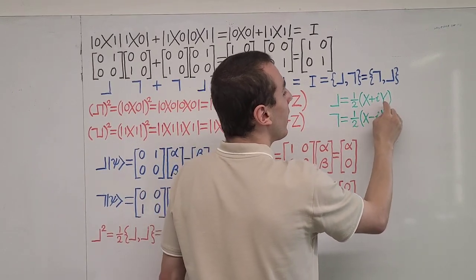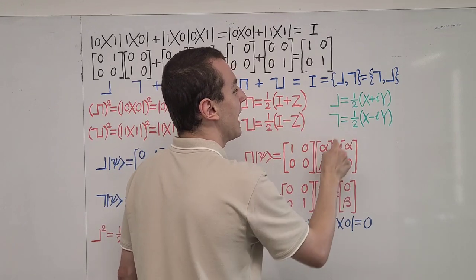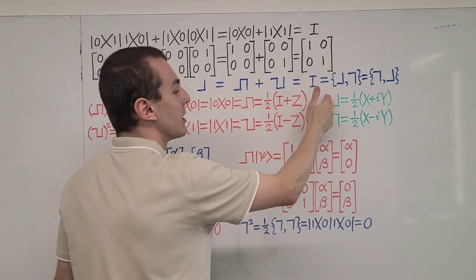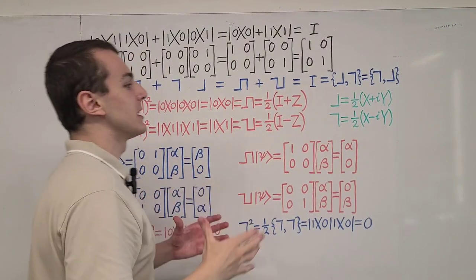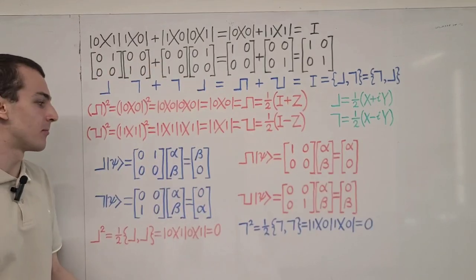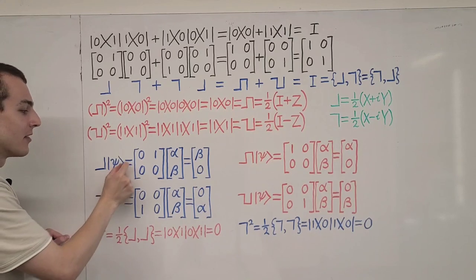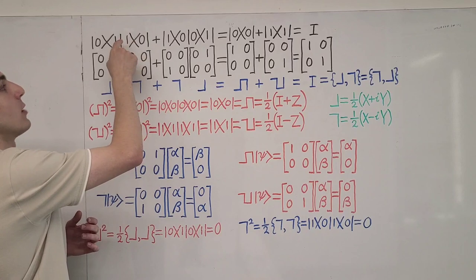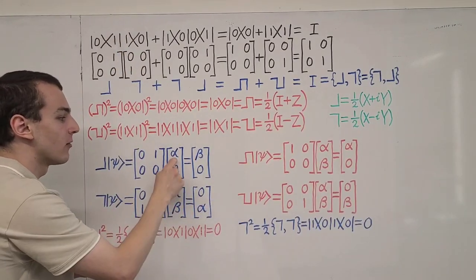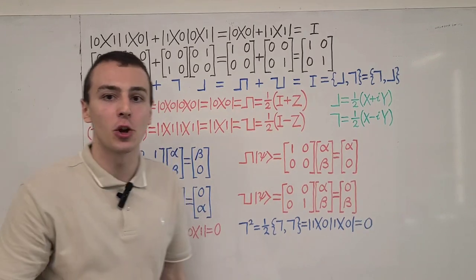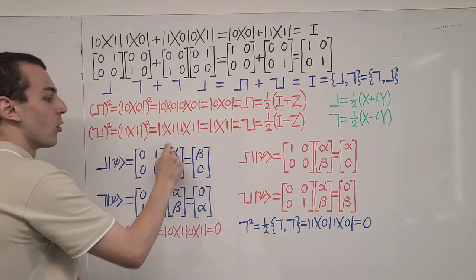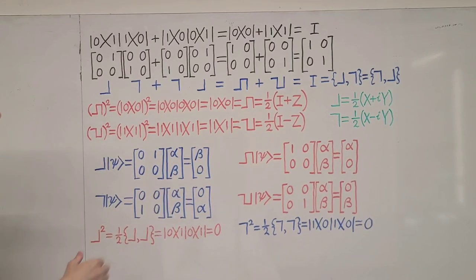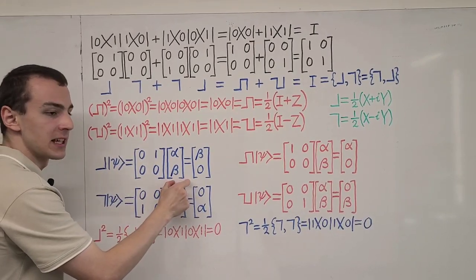Here we have the Pauli-X and Pauli-Y operators being used to construct the lowering operator and the raising operator. Now, why are we calling these lowering operators, raising operators, and projectors? It's because of the action they have on general states. If we consider a general state Psi — a linear combination of the two basis states with coefficients alpha and beta — we also want to impose the normalization condition. We have a coefficient for the ground state and a coefficient for the first excited state.